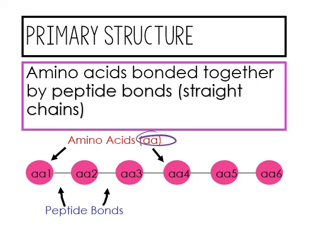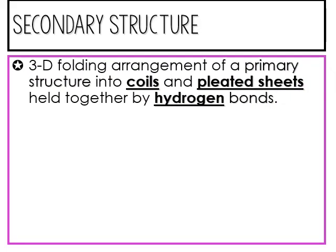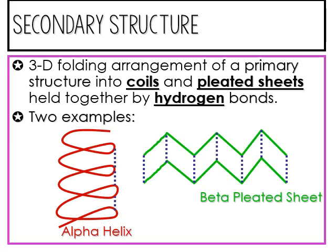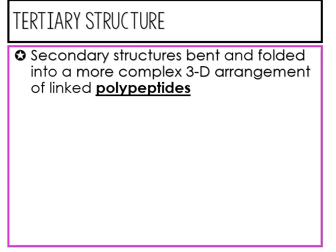The peptide bonds connect the amino acids in the primary structure. Secondary structures are more 3D — they are coiled and form what are called pleated sheets, held together by hydrogen bonds. You have two kinds: the alpha helix, which gives coils like a spring, and the beta pleated sheets, with dotted lines representing hydrogen bonds.